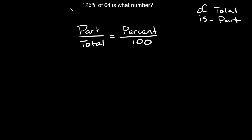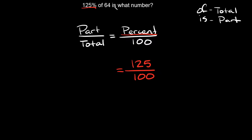One more: '125% of 64 is what number?' Write down your formula. 125% means we put 125 in the percent spot, over 100. Then 'of 64' — since it says 'of,' that means 64 is the total, so put 64 on the bottom. 'Is what number?' — the part is what we're looking for, so I'll use the variable p for part.